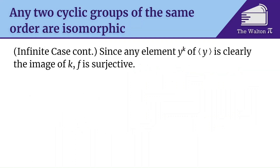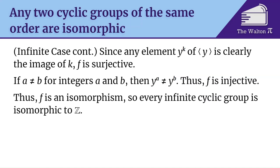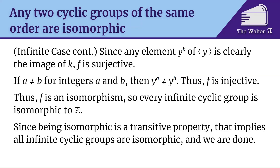Now we need to show that f is a bijection. Clearly y to the k is the image of k so f is surjective, but we can't just say that implies bijection — that argument was only valid for the finite case. Here we need to prove injectivity separately. If a is not equal to b, then y to the a is not equal to y to the b, so f is injective. Therefore f is bijective and an isomorphism, meaning every infinite cyclic group is isomorphic to Z. Since being isomorphic is a transitive property, all infinite cyclic groups are isomorphic to each other.